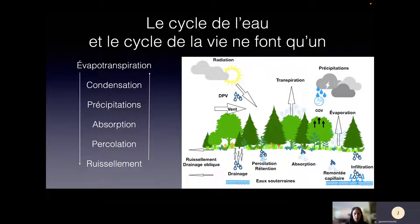Ce qui est intéressant de savoir, c'est que dans le cycle de l'eau, il y a des éléments méconnus qui ont été découverts plus récemment : le rôle du déficit de pression de vapeur, qui peut un peu bouleverser le cycle de l'eau, de même que les composés organiques volatils émis par les arbres, qui sont un élément essentiel à la formation des nuages. Ces éléments-là ne sont pas connus, et c'est ça que j'aimerais vous montrer.